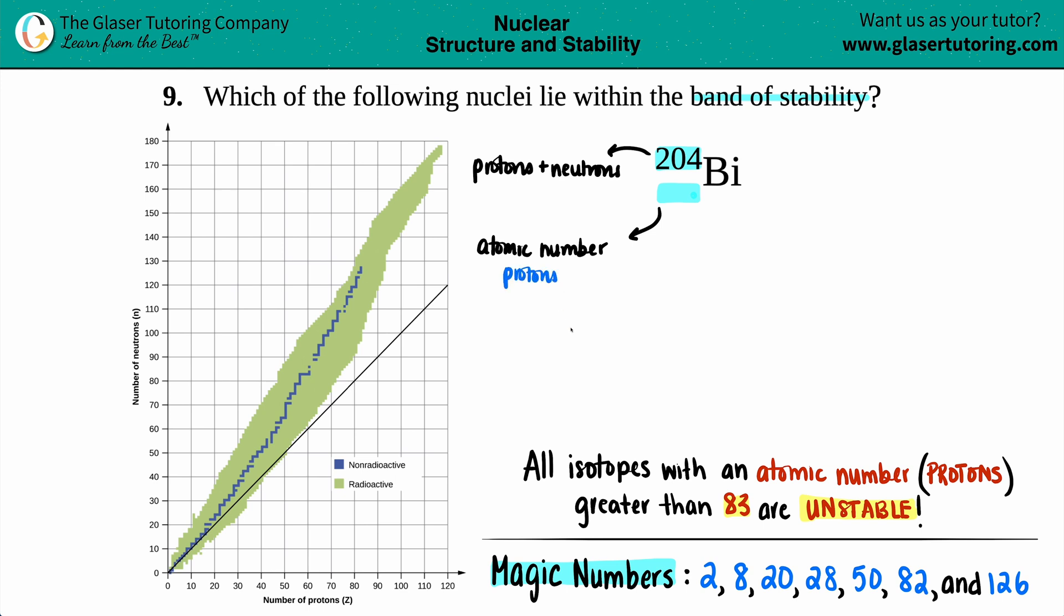I look on my periodic table and I try to find Bi, and there it is, it's number 83. So I know that I have 83 protons.